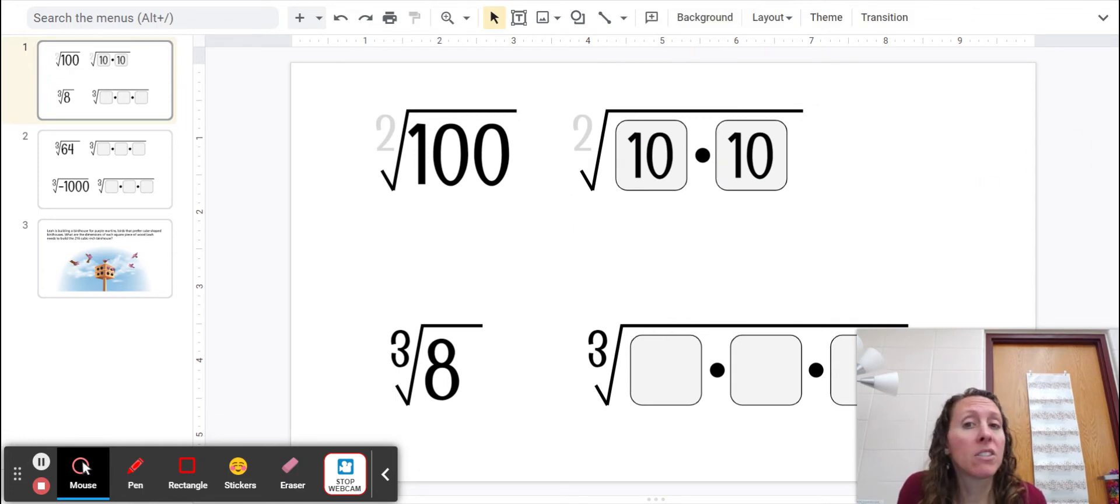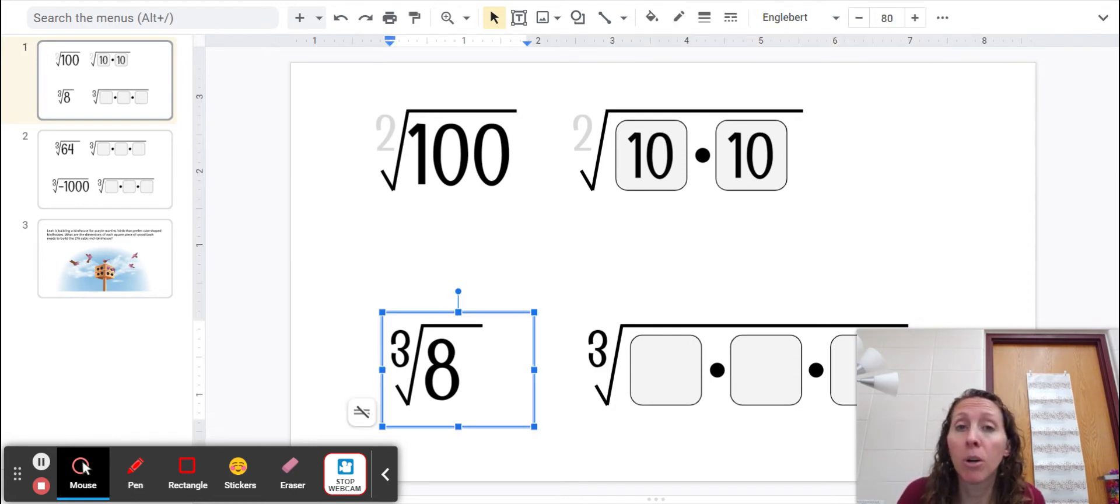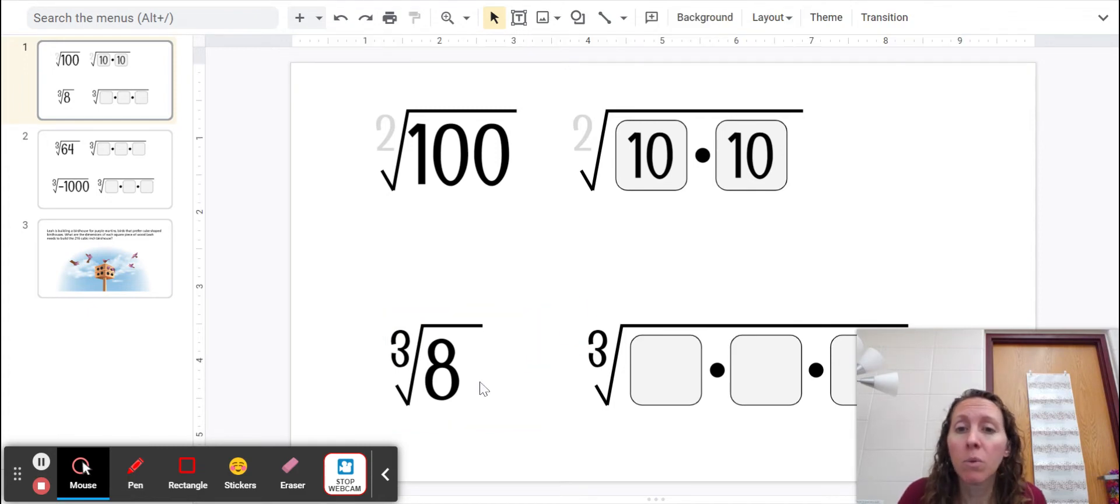So the answer to the square root of 100 would be 10. Now if instead there's a different number there, that number is telling you how many times that number needs to times itself by to equal the number under the radical. So for this one,